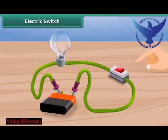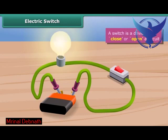When we press the other end of the strip on the switch, it gets connected to close the circuit. The current flows through the circuit and the bulb starts glowing. A switch is a device to close or open a circuit.